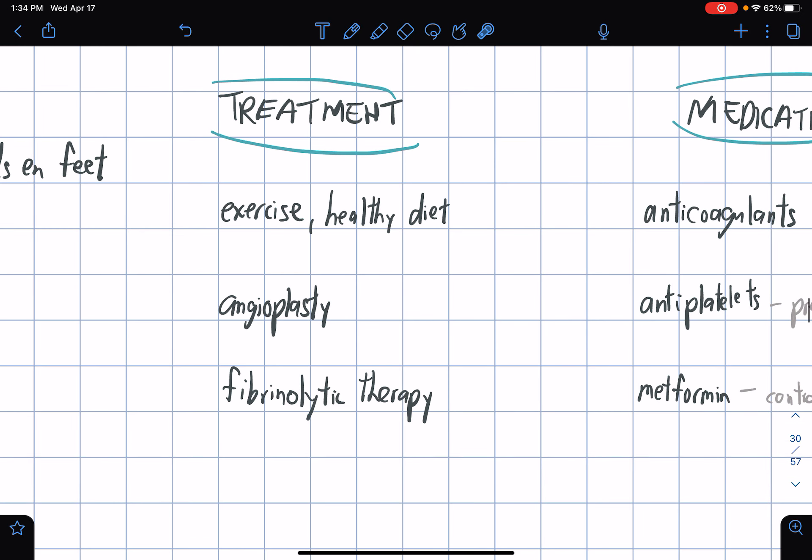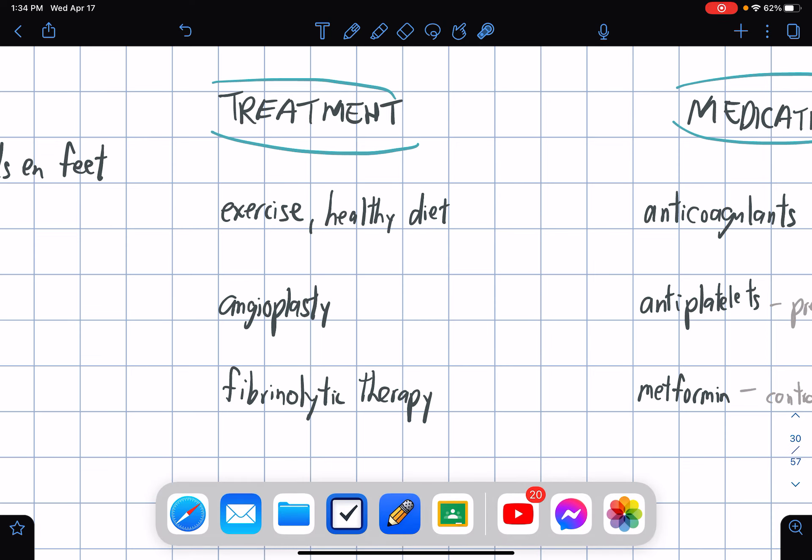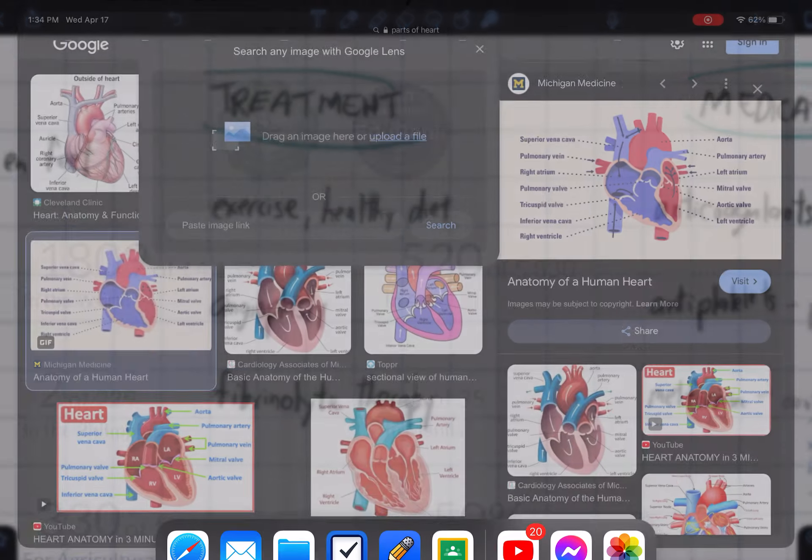For treatment, what do we do? We exercise, we change our lifestyle to a more healthy one. We undergo angioplasty - I think this is a kind of surgery that intends to remove the buildup of plaque.